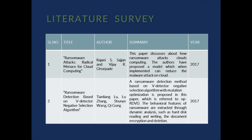The first paper discusses how ransomware attacks cloud computing. The authors have proposed a model which can be implemented to reduce malware attacks on the cloud. The second paper presents a ransomware detection method based on a negative selection algorithm with mutation optimization, where the behavior and features of ransomware are extracted and variable-size detectors are generated to detect ransomware and alert the organization.